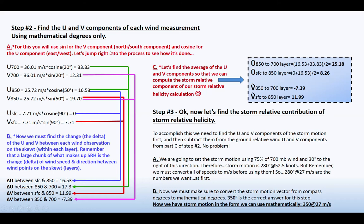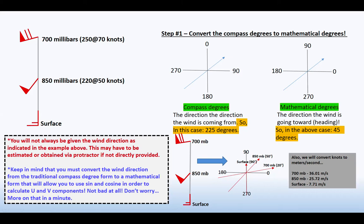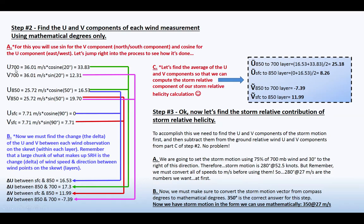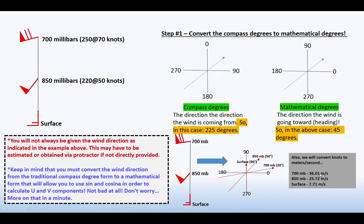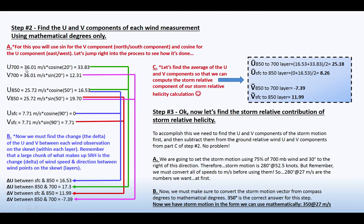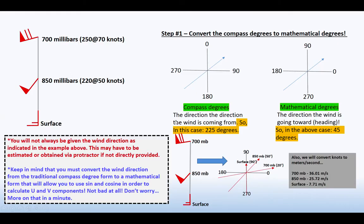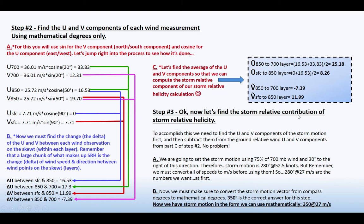So if we use the information that we were looking at here and that we derived from this page, the U component at 700 millibars, as we know, the 36.01, which came from here, when you converted the wind speed at 700 millibars from knots to meters per second, that's here. So you would do 36.01 times cosine, times the cosine of 20 degrees. Now, where does the 20 degrees come from? It just comes from right here. The mathematical degrees that 700 millibars is moving toward, right? Because we had to make the conversion from compass degrees to mathematical degrees.